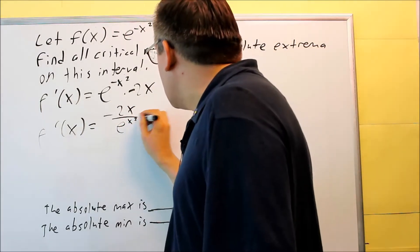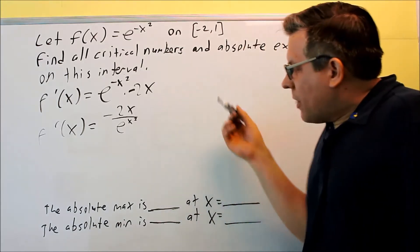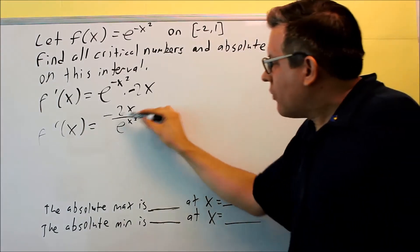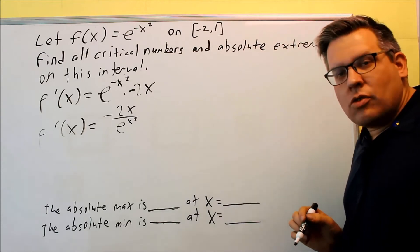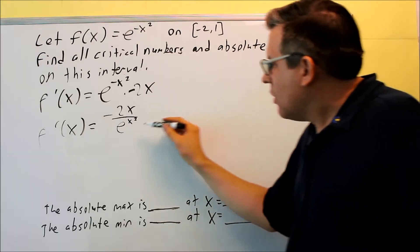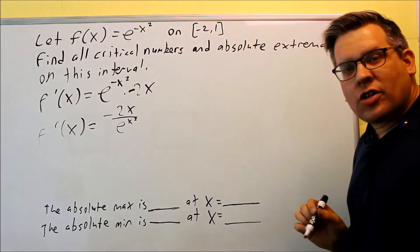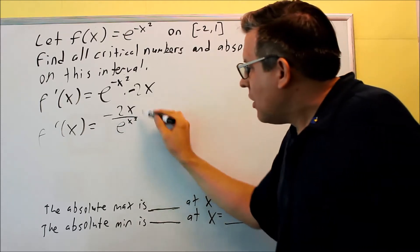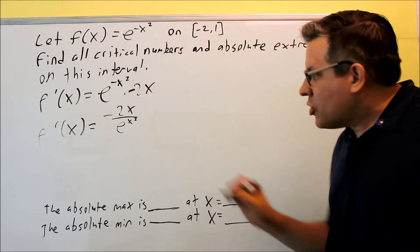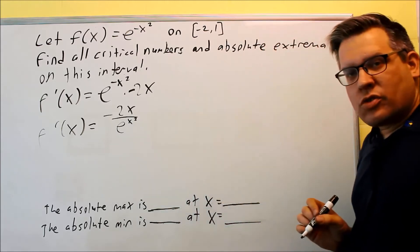Now, you want to take a look at if the bottom could possibly be equal to zero. What we know about exponential functions is that these have horizontal asymptotes at zero, which means this is actually not ever going to equal zero.